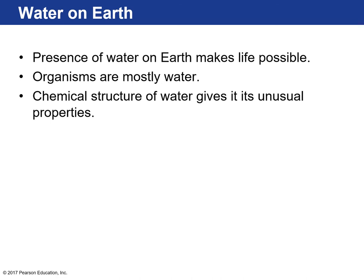The presence of water on Earth makes life possible as we know it. Water is essential for sustaining all forms of life on our planet — it's the primary component of all living organisms. About 65% of human makeup is water and plants are about 90%. The chemical structure of water, H2O — two hydrogens and one oxygen — gives it really unusual properties and specific properties that help organisms on this planet survive.